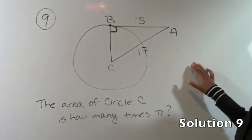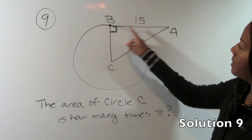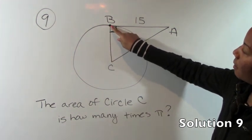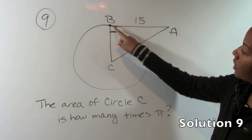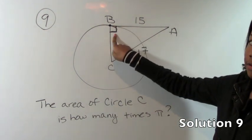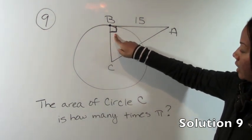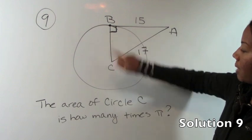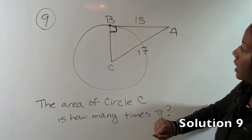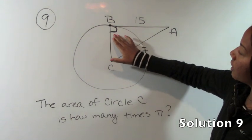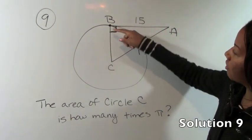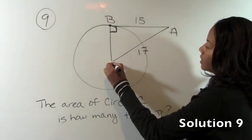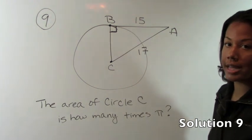Number 9. For number 9, we are told that line segment AB is tangent to circle C at point B. That simply means that at point B at the intersection of AB and BC, we have a right angle. We are asked to find the area of circle C in terms of π. So how many times greater than π is the area of circle C? So what you'll notice here is that we have a right triangle. So we can use the Pythagorean theorem to find the length of this radius. Once we find the length of this radius, then we can plug it into the formula πr² for the area.